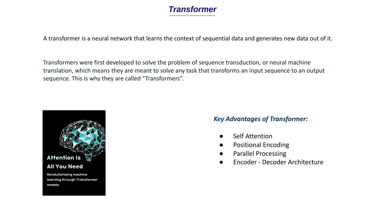The third advantage is parallel processing. One reason RNNs didn't perform as well is that they process data sequentially, which prevents effective use of the parallel processing power of GPUs. In a transformer, processes like self-attention and embedding can all be done in parallel, allowing transformer models to train on large datasets efficiently — something RNNs cannot do given their sequential computational requirements.